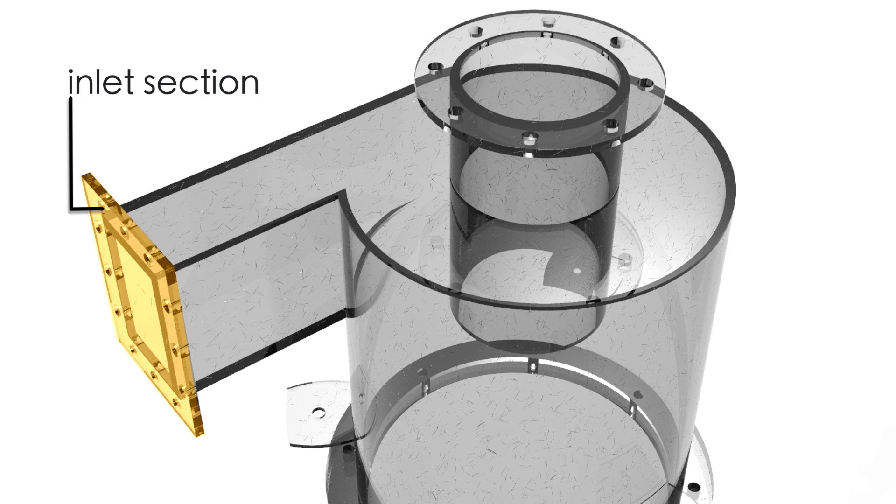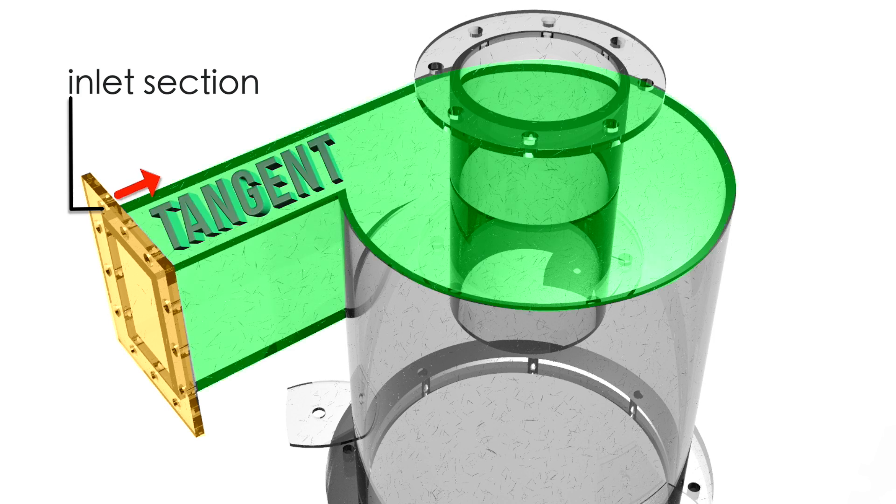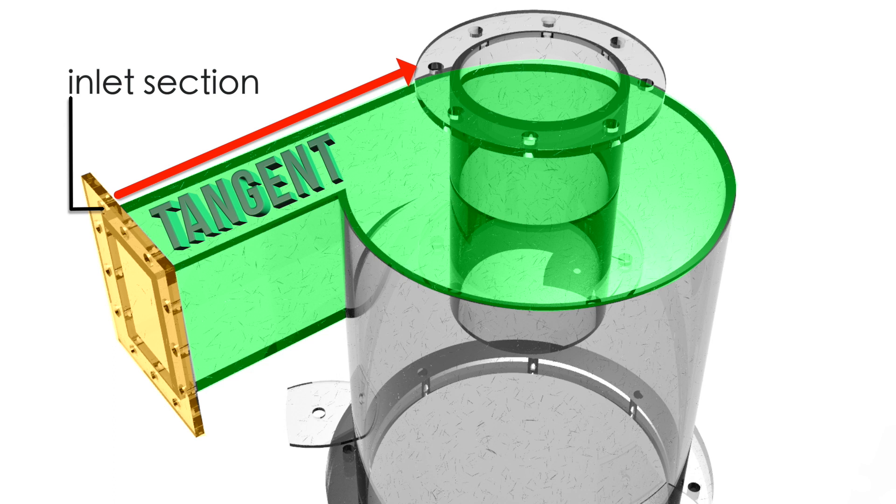First of all, we have our inlet section entering the separator along a tangent. This helps the air to smoothly move along the wall. Secondly, there is a cylindrical liner which prevents direct access to the suction side.